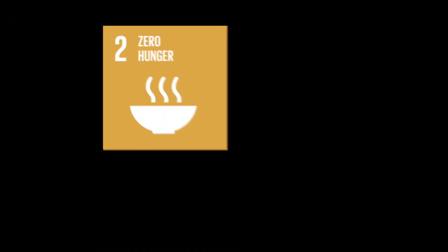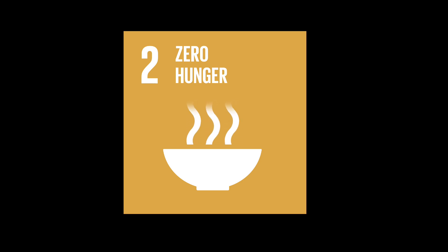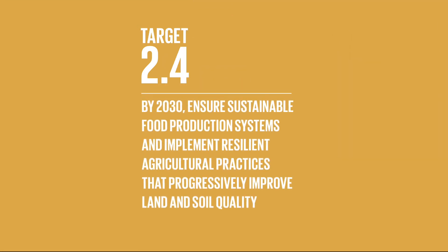The goals of SDG2 are to end hunger, achieve food security and improved nutrition, and promote sustainable agriculture. Target 2.4 demands that we must produce food sustainably and use agricultural practices that improve land and soil quality.